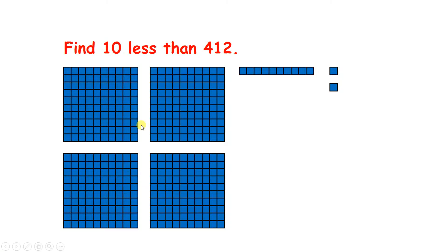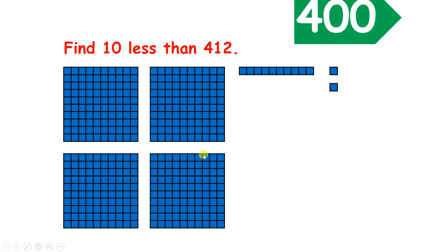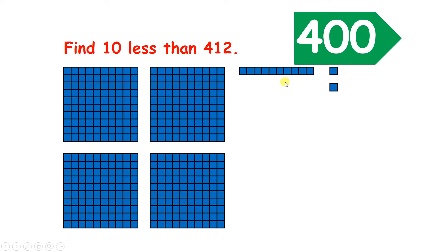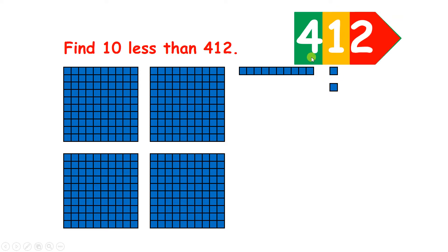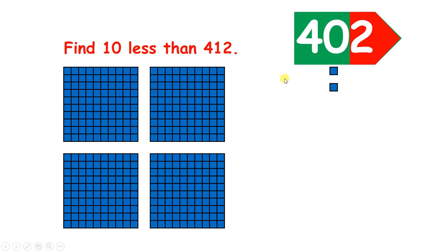We have four hundreds, one ten, and two units, so we have four hundred and twelve. If we subtract ten, we don't have any tens, or we have zero tens, so we have the number four hundred and two.